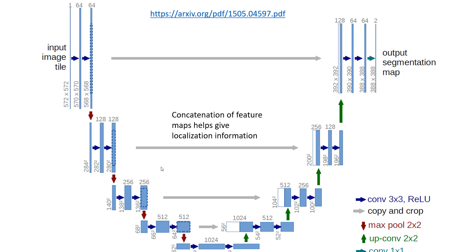The architecture contains two paths. The path on the left is called the contraction path, also known as the encoder path. On the right is the expansion or decoder path. In between, data from the encoder — for example this layer here — is concatenated with the corresponding decoder layer. This concatenation of feature maps is exactly what provides localized information and makes semantic segmentation possible using U-Net.